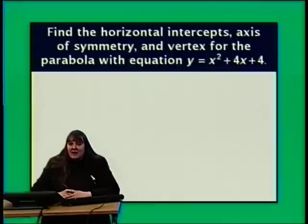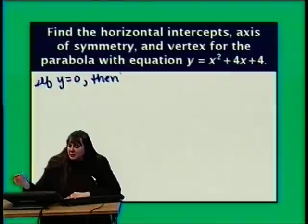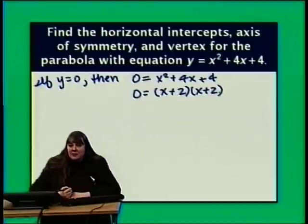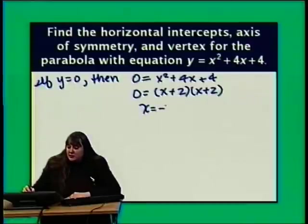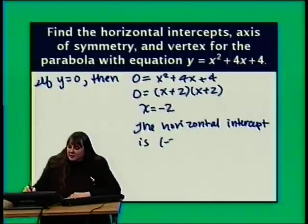Now let's find the horizontal intercepts, axis of symmetry, and vertex for the parabola y equals x squared plus 4x plus 4. Setting y equals 0: 0 equals x squared plus 4x plus 4, which factors as (x plus 2)(x plus 2), since 2 times 2 equals 4 and 2 plus 2 equals 4. The zero product property tells us x must equal negative 2. This parabola has only one horizontal intercept: (negative 2, 0).